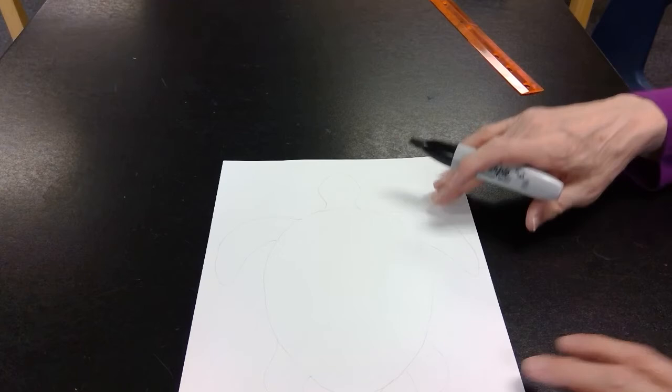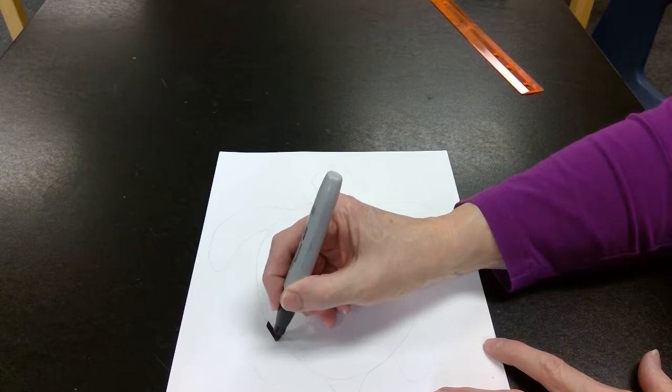I'm going to take a white piece of paper right here, and we're going to draw a turtle, a sea turtle. So I'm going to take the black marker. If you would like to draw it with pencil first, that's fine, and I'm going to use black so that you can see it well from the video. So I'm just going to trace around.